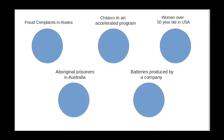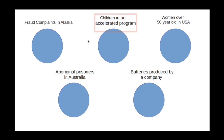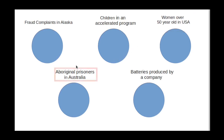Although we will be talking in general terms, it might be helpful to have some specific examples in mind. Consider these populations: all the fraud complaints in Alaska, the children in a gifted and talented program, all the women over 50 years old in the United States, all the Aboriginal prisoners in Australia, or batteries produced by a company.